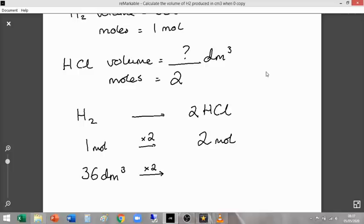So I'm just going to be really lazy and do 36 decimetre cubed times by 2 to get 72 decimetre cubed. So my volume of HCl is 72 decimetre cubed.